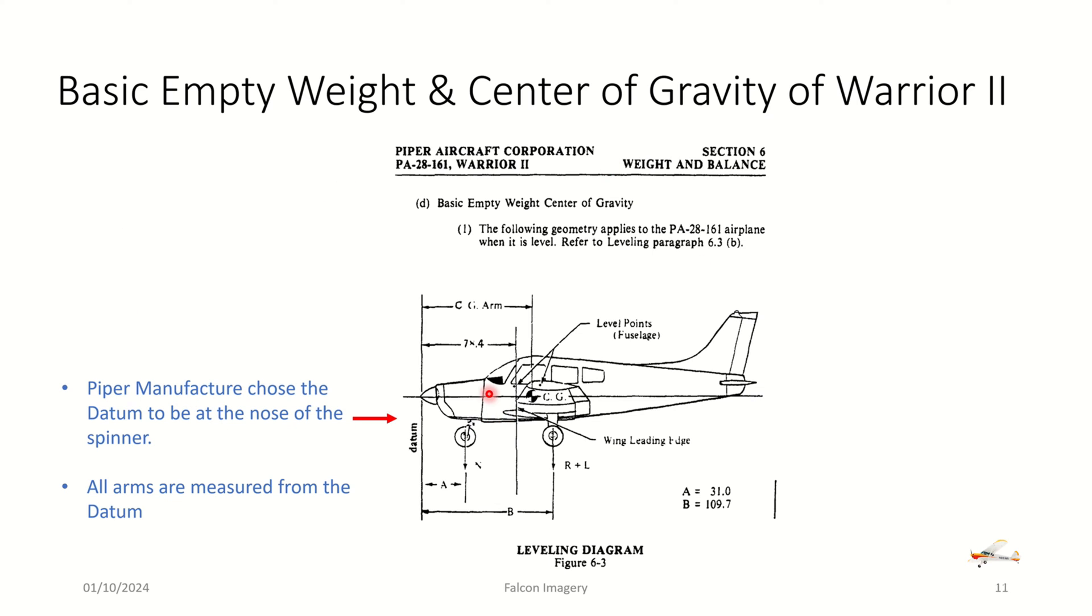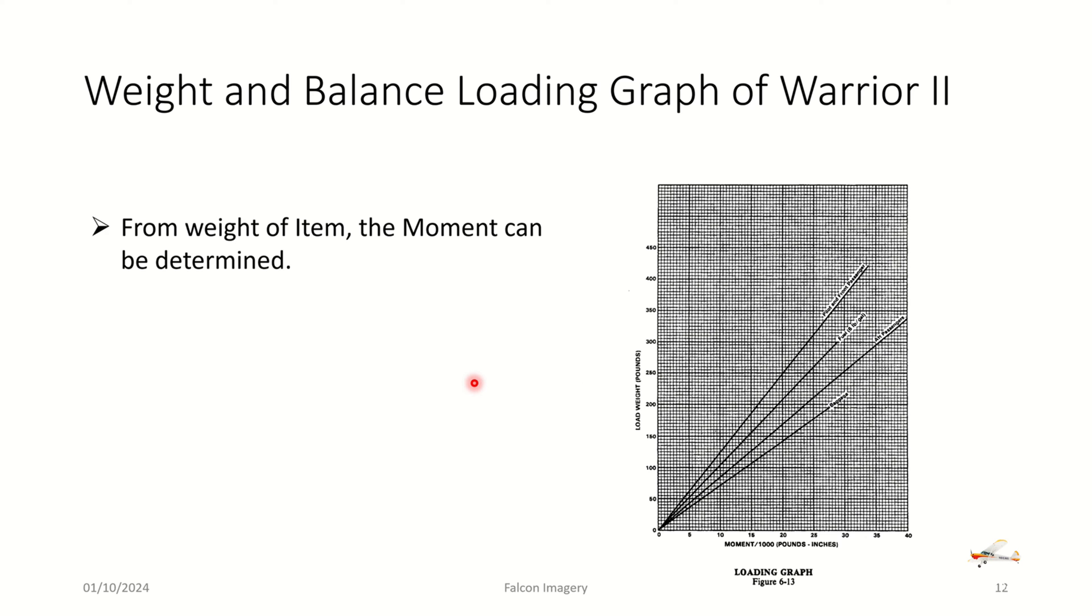This is just showing a Piper Warrior, and you can see that it made the datum here the tip of the nose. Most of them with Skyhawks, they're located at the firewall. Other aircraft might be at the tip of the nose of the spinner. They could be at the mean cord line on the wing. So you really have to understand the POH to know where the datum is. Fortunately, they'll give some worksheets usually in the POH to help you along there.